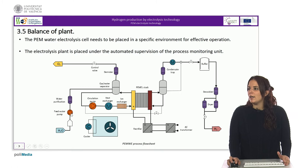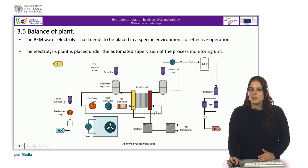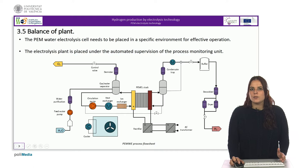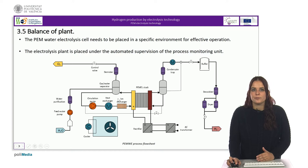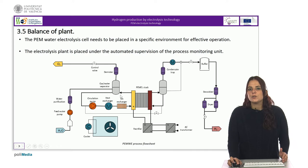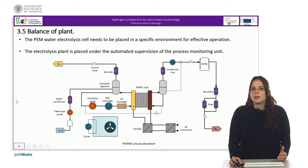Then an AC-DC rectifier produces the appropriate DC power source required by the electrolysis module. On the left, we have the purification system, where purified water is provided by the water management unit that takes tap water and performs several purification steps required by the process. During operation, the water is pumped through the stack by the water circulation unit, where online resins are used to maintain the required level of water purity. In this loop, we can also find a heat exchanger used to extract the excess heat released by the electrolysis unit.